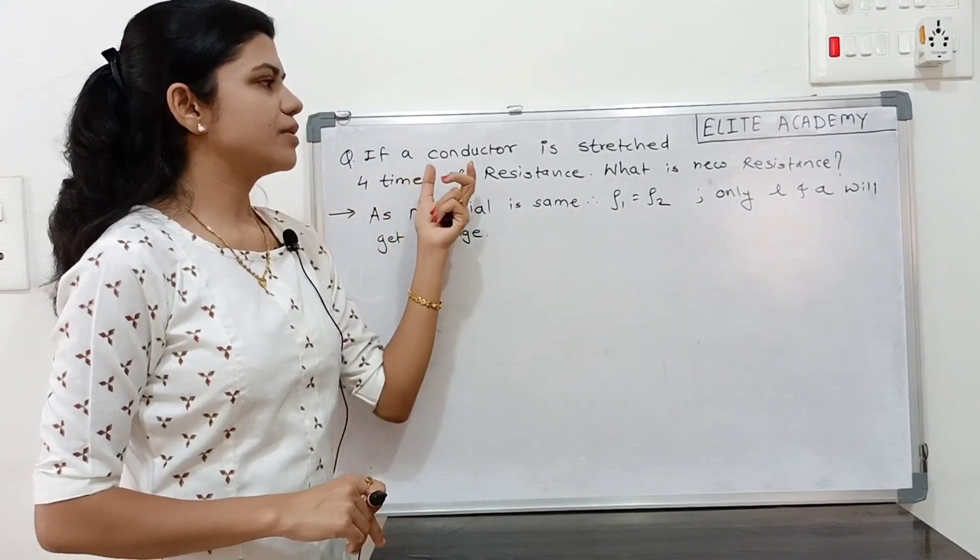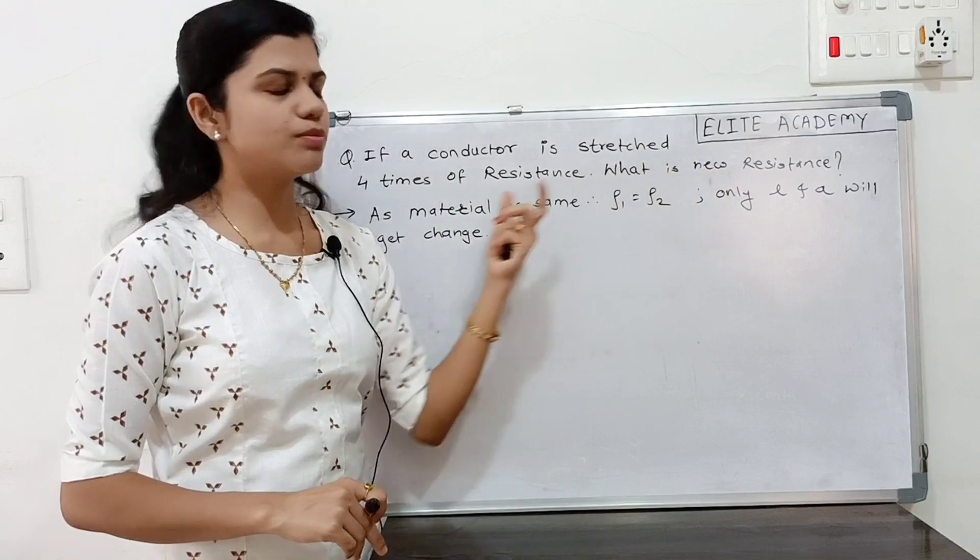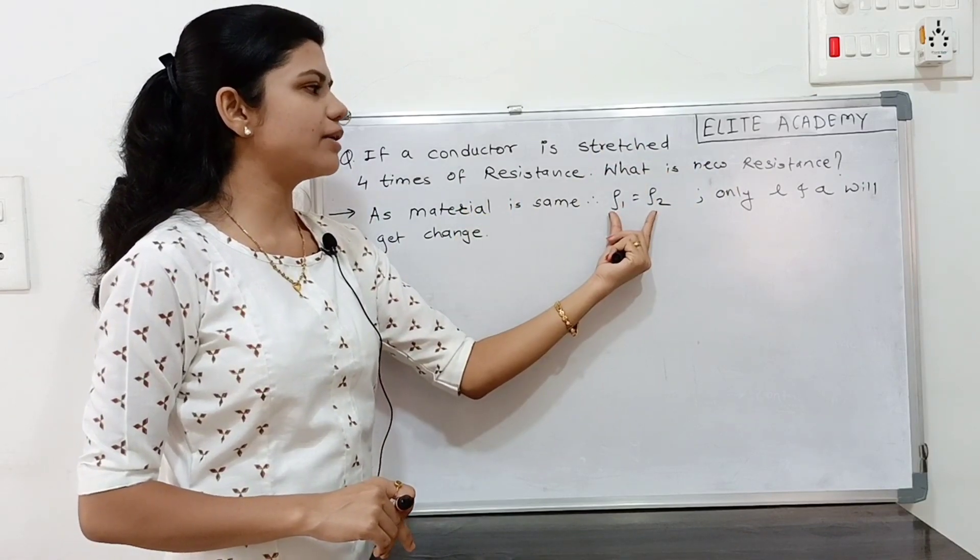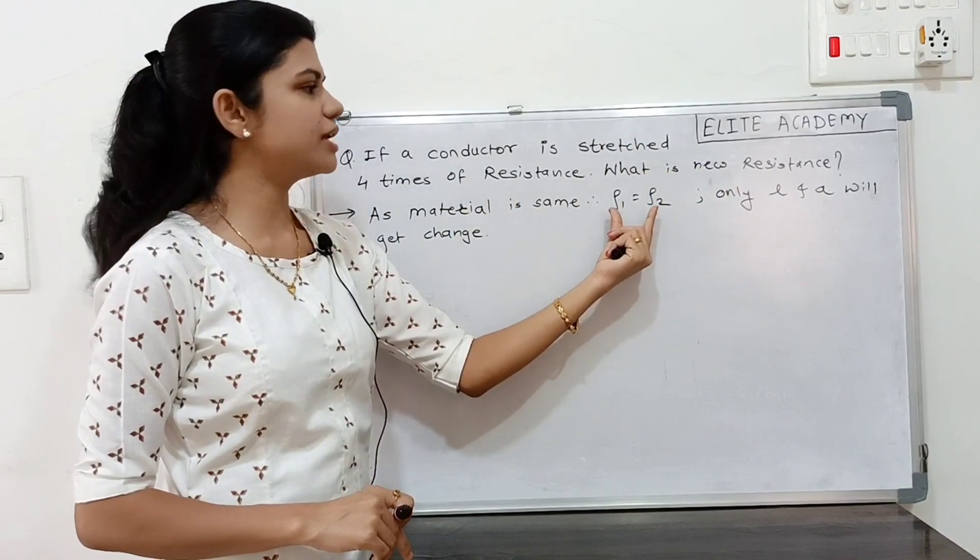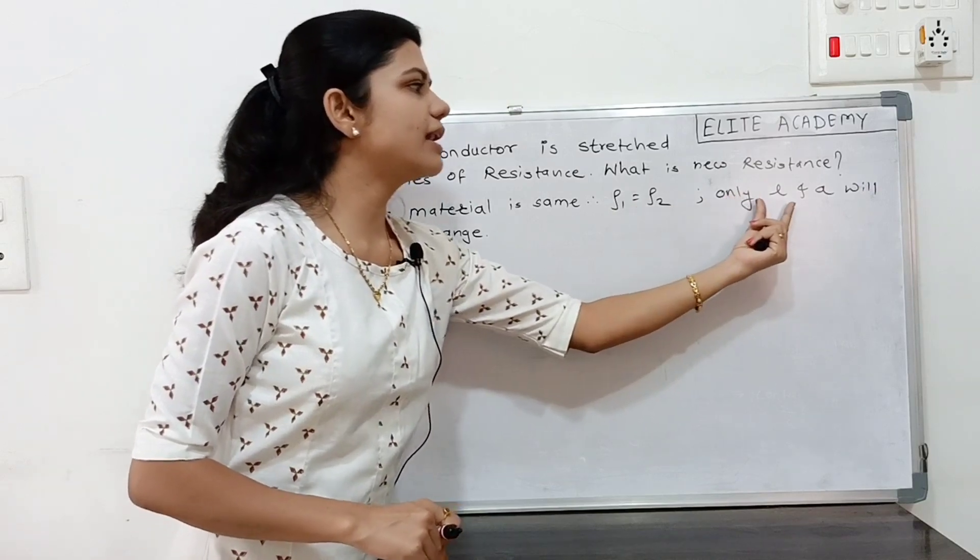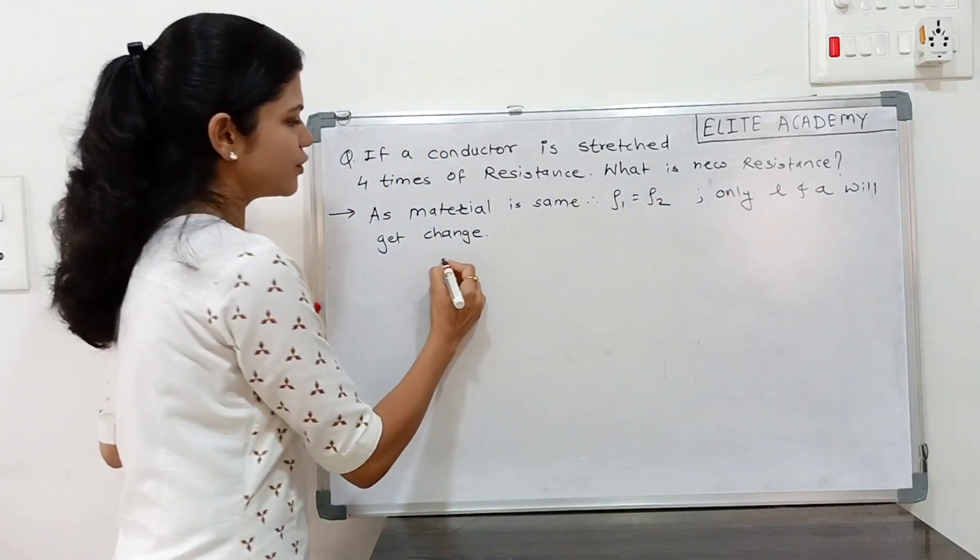Here material is same for resistance 1 and resistance 2. Material is same. Therefore, rho 1 and rho 2, it is the resistivity of material, it is same. Only L and A will get changed. Therefore, for conductor.